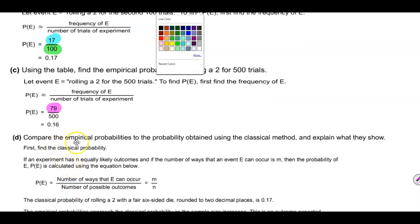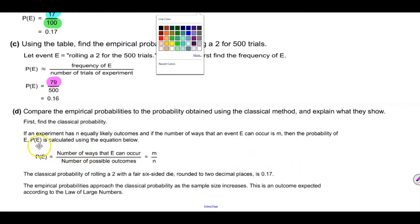Now in part D, they want us to compare the empirical probabilities to the probability obtained using the classical method and explain what they show. First we need to find the classical probability. In an experiment, if an experiment has n equally likely outcomes, and if the number of ways that an event E can occur is m, then the probability of E is calculated using this equation below, which is m over n.